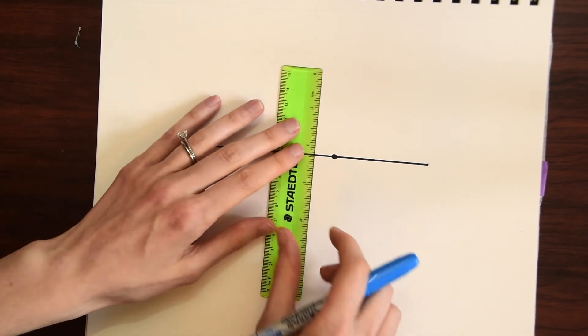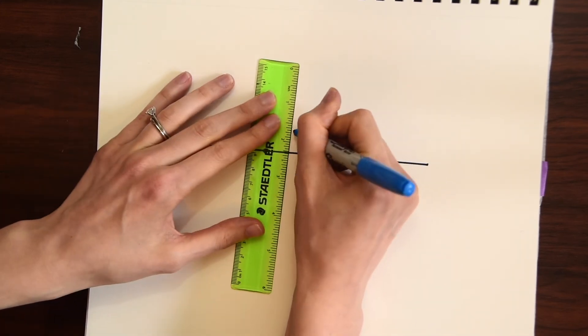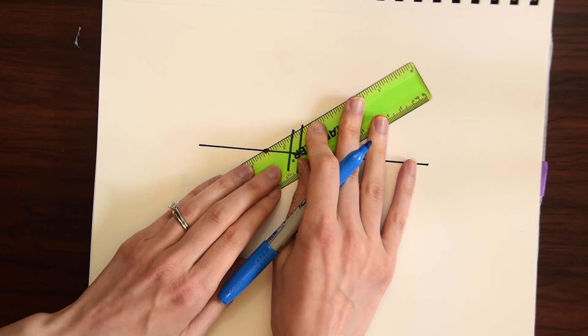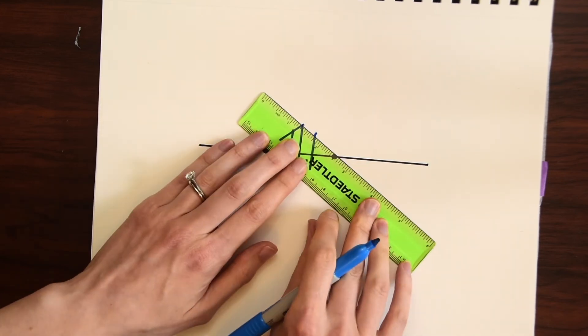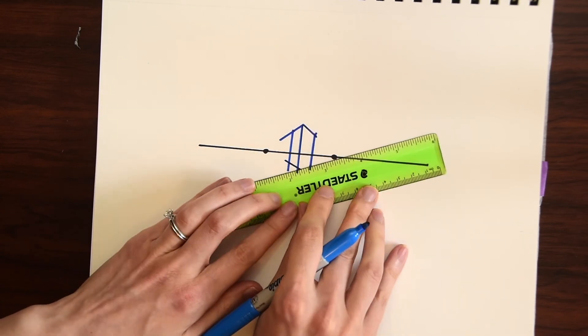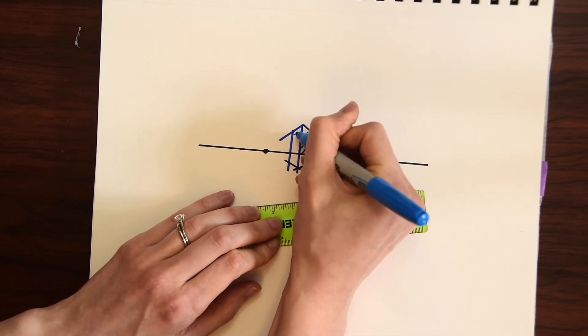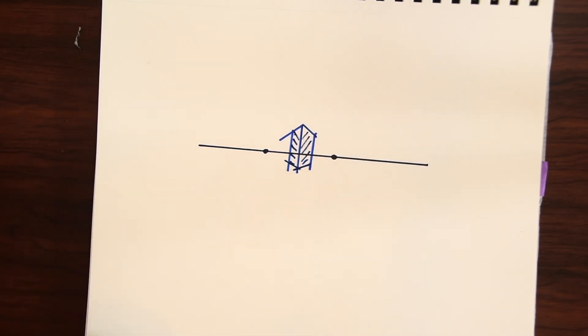So first we want to draw our box so we're going to draw some lines in the middle. So you can see our box looks super tiny. It could be a tiny building in some kind of model or something.